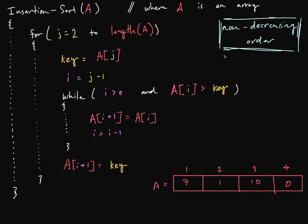We also talked about how when we start this algorithm of insertion sort, we look at the first element and we know that this element is already sorted. So our sorted sub-list is done for this very first element. As you can see, our for loop is starting from index 2, so we don't really need to worry about that first element — it's already sorted. Here's our sorted sub-list so far.